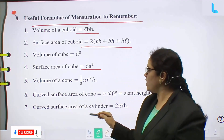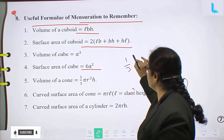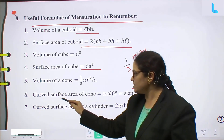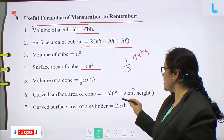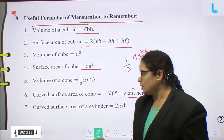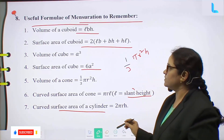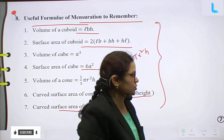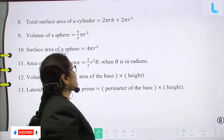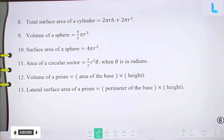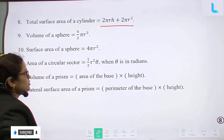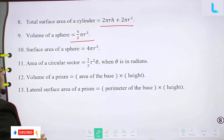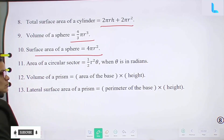Volume of cone equals 1/3 π r² h. Curved surface area of cone equals π r l, where l is the slant height. Curved surface area of a cylinder equals 2πrh. Total surface area of a cylinder equals 2πrh plus 2πr². Volume of sphere equals 4/3 π r³. Surface area of a sphere equals 4πr².